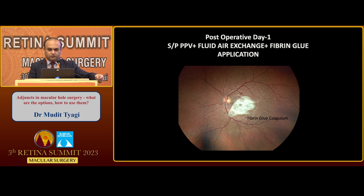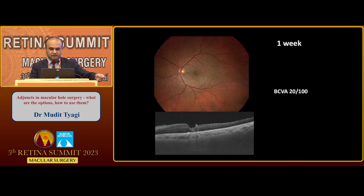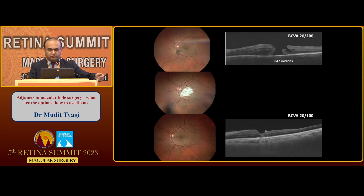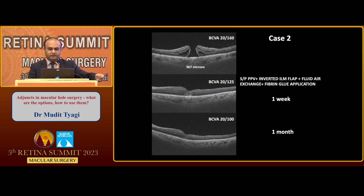On the first post-operative day, the patient had a fluid-filled globe with the coagulum covering the break. At one week, visual acuity improved to 20/100 and the macular hole was closed. Another case with visual acuity 20/160 and a 967-micron hole diameter — at one week you can see the hole getting closed, and at one month the macular hole is closed with visual acuity improved to 20/200.